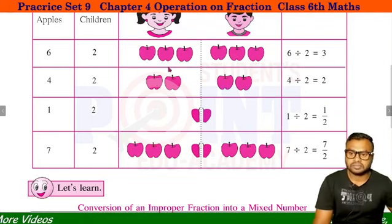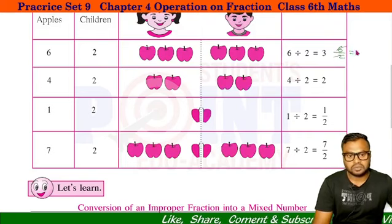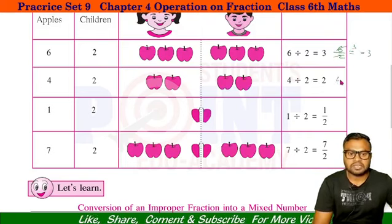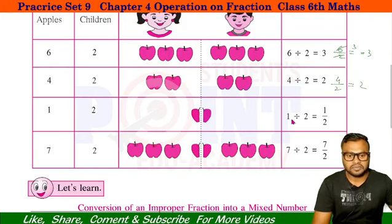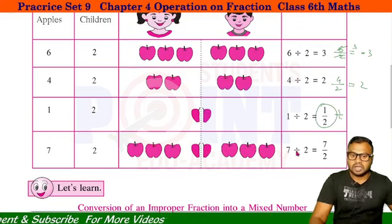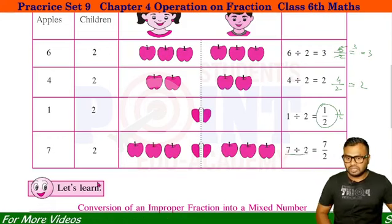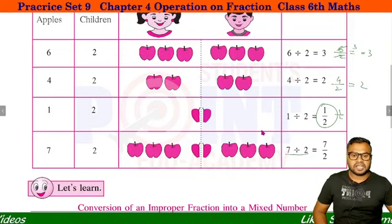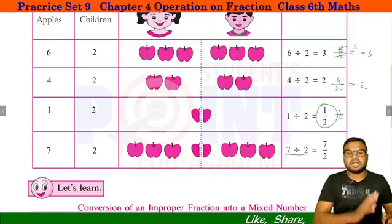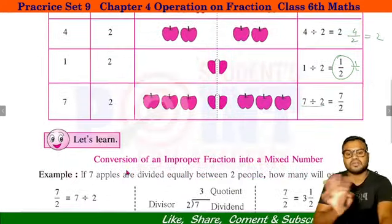यहाँ पर कुछ Fractions दिये हुए हैं। जैसे कि 6 divided by 2, इसका मतलब 6 upon 2 होता है। 2, 3 जा 6, तो answer आ जाता है 3। इसका मतलब होता है 4 upon 2, इसका answer आता है 4। यह 1 by 2 और यह 7 divided by 2। तो यह सब fraction है। Division में नंबर को रखना याने ही fraction होता है। Fraction और divide एक ही बात है।